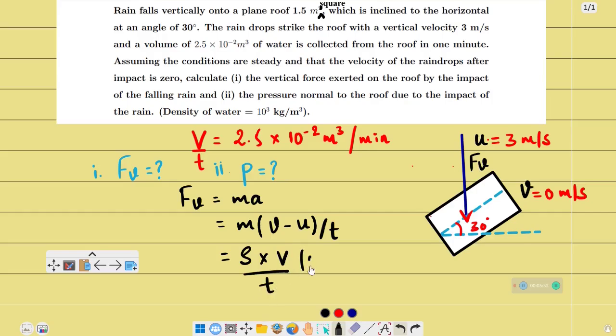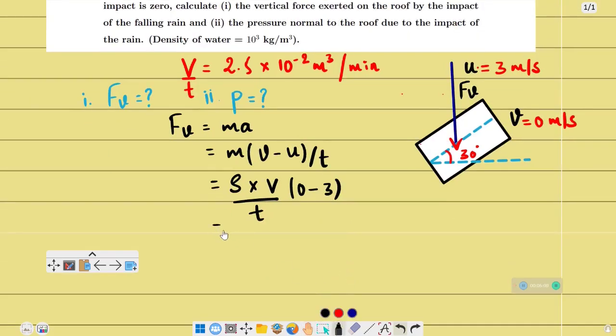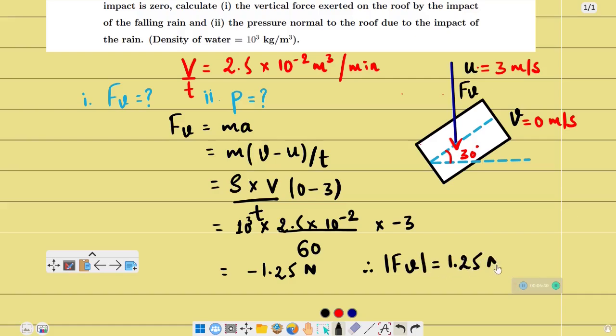So mass divided by t, and v is 0 minus 3. The density of water is 10 to the power 3, times volume 2.5 times 10 to the power minus 2, divided by t. T is 1 minute, which is 60 seconds, times minus 3. Calculating this, the answer is minus 1.25 newtons. The magnitude will be equal to plus 1.25 newtons.